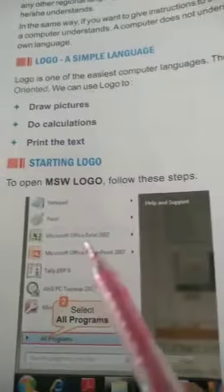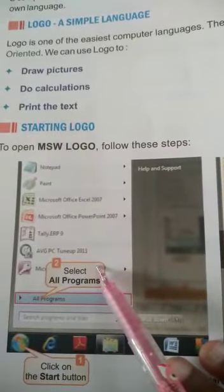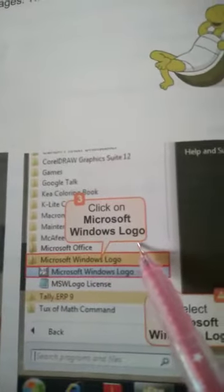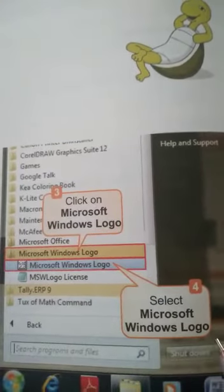How to start Logo? To open MSW Logo, follow these steps. Here is the first step: Click on the start button. Second, select all programs. Third, click on the Microsoft Windows Logo. Next, select Microsoft Windows Logo.